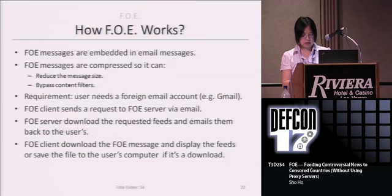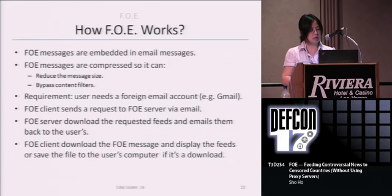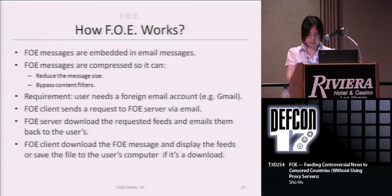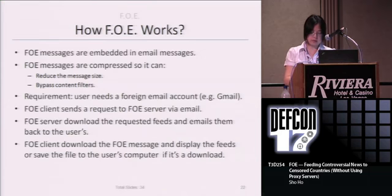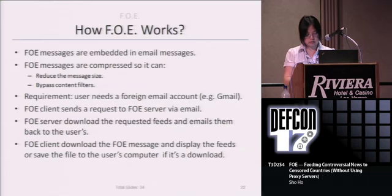Let's summarize how FOA works. FOA messages are embedded in email messages. FOA messages are compressed to first reduce the message size, and second to bypass content filters. The requirement is that users need a foreign email account, for example Gmail. FOA clients send a request to a FOA server via email. A FOA server downloads the requested feeds and emails them back to the user. A FOA client downloads the FOA message and displays the feeds, or saves the file to the user's computer if it's a file download.